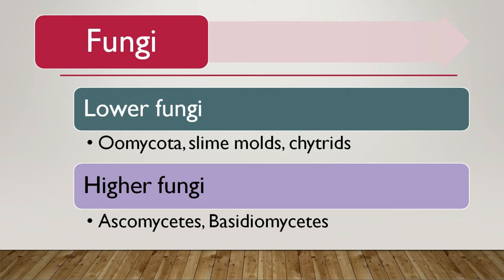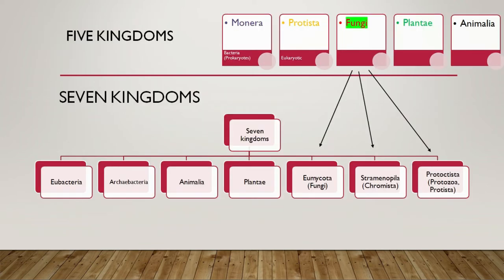Whereas in the case of higher fungi like Ascomycetes and Basidiomycetes, they are higher fungi because they differ in characteristics. They do not produce zoospores, they do not produce motile spores, but they do produce conidia, which are airborne. So these are some characteristics of higher fungi.